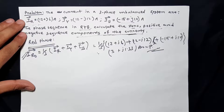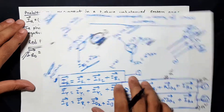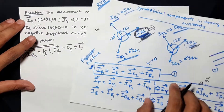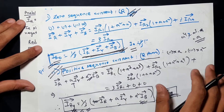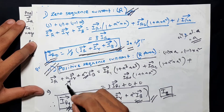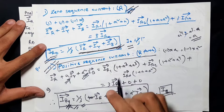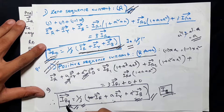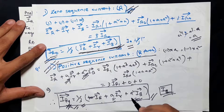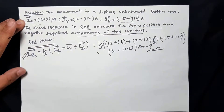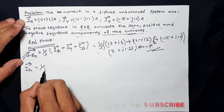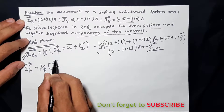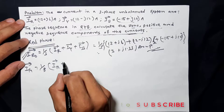So we can simplify to 3-0 and 2-0. This is the negative sequence and positive sequence current. The positive sequence current is equal to 1 by 3, and the positive sequence current is also equal to 1 by 3.